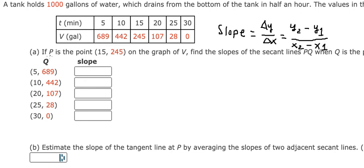So the question: we know that P is the point (15, 245) on the graph. That's this one here.